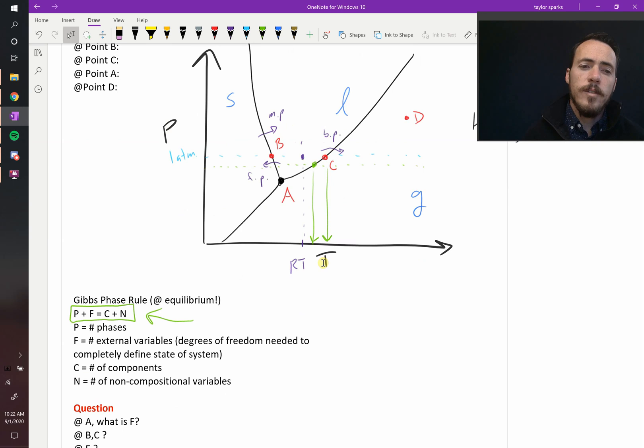So what is F? F is the number of external variables which are your degrees of freedom that you need to define in order to completely define the state of your system.